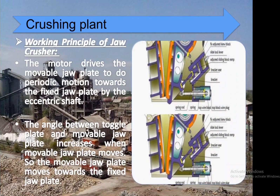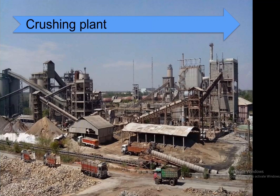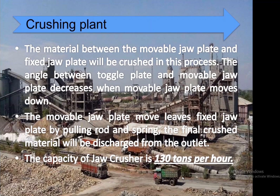In the working principle of the jaw crusher, the motor drives the movable jaw plate to perform periodic motion towards the fixed jaw plate via the eccentric shaft. The angle between the toggle plate and movable jaw plate increases as the movable jaw plate moves toward the fixed jaw plate, crushing the material between them. When the movable jaw plate moves down, the angle decreases and the crushed material is discharged from the outlet via the pulling rod and spring. The capacity of the jaw crusher is approximately 130 tons per hour.